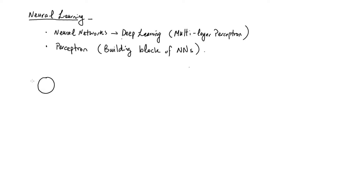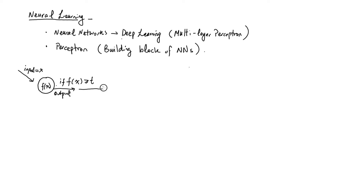The idea is that a neuron in the brain gets a signal — it gets some input, let's say called x. It does some computation inside the neuron, and then if f(x) is bigger than some threshold t, it shoots out a signal. This signal goes into the next neuron and so on. The idea is really simple: if I get an input, I do some function, and if that output is bigger than some threshold, I output another signal. If not, I don't do anything. This is basically the idea behind a perceptron.